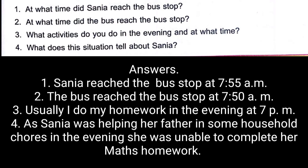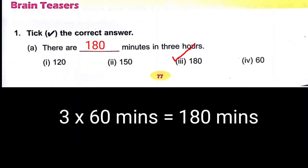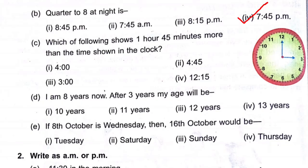Next, choose the correct answer: (a) There are 180 minutes in three hours — 3 × 60 = 180 minutes. (b) Quarter to eight means 7:45. (c) One hour forty-five minutes more after 3 o'clock — 3:00 + 1:45 = 4:45.